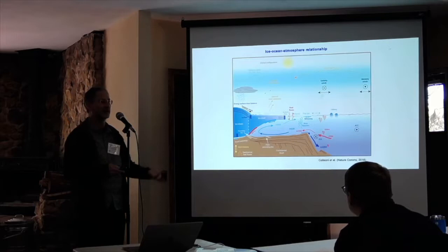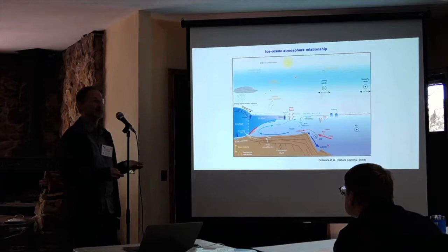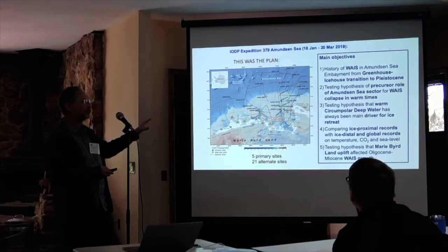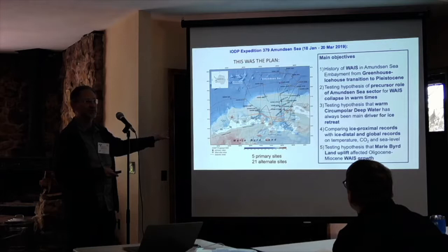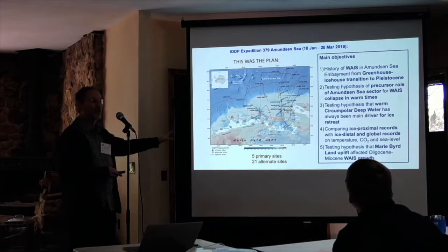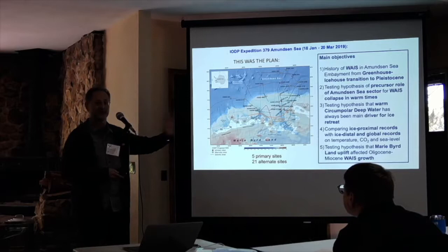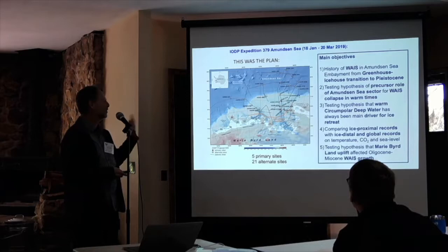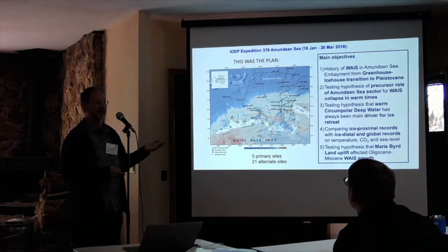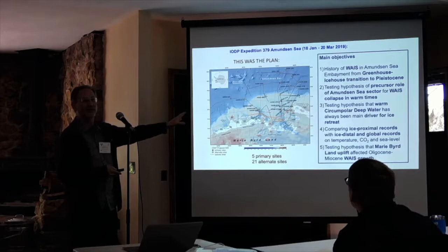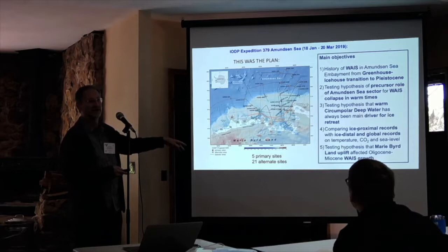To get the paleoclimate record for these changes, especially from the Pliocene to the recent, the original proposal had a large suite of sites — five primary sites. On this proposal we had 21 alternate sites, which is more than three times as many as most proposals. It's a good thing we did, because we had significant logistic constraints. The objectives outlined in the proposal were the classic questions this community has been addressing for a long time regarding the interaction of the ocean and the ice from the historic record.